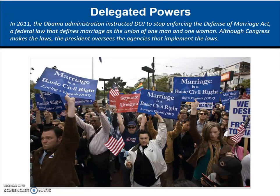Looking at how the administration can use declarations: the Obama administration told the DOJ to stop enforcing the Defense of Marriage Act. Congress made the laws, but the president oversees the agency that implements them — so if he's telling them to stop enforcing something, he's directing how that agency operates.